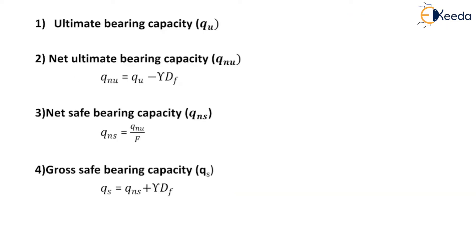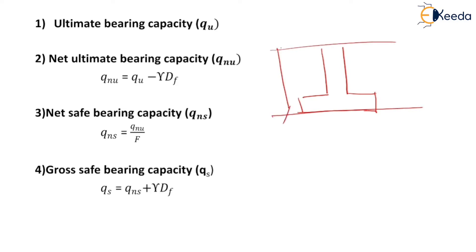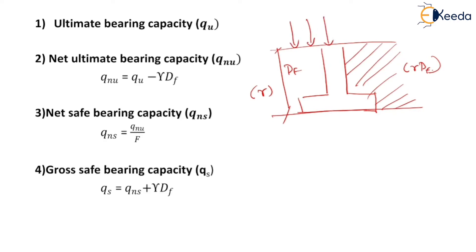Now we will revise basic definitions. Suppose a strip footing is laid at depth Df. Gamma is the density of the soil, and the total weight of soil above the base of the footing equals γ·Df, which is also called surcharge. If P is the weight of the superstructure, the ultimate bearing capacity equals total pressure at the base of the footing, which is γ·Df plus the weight of the superstructure.